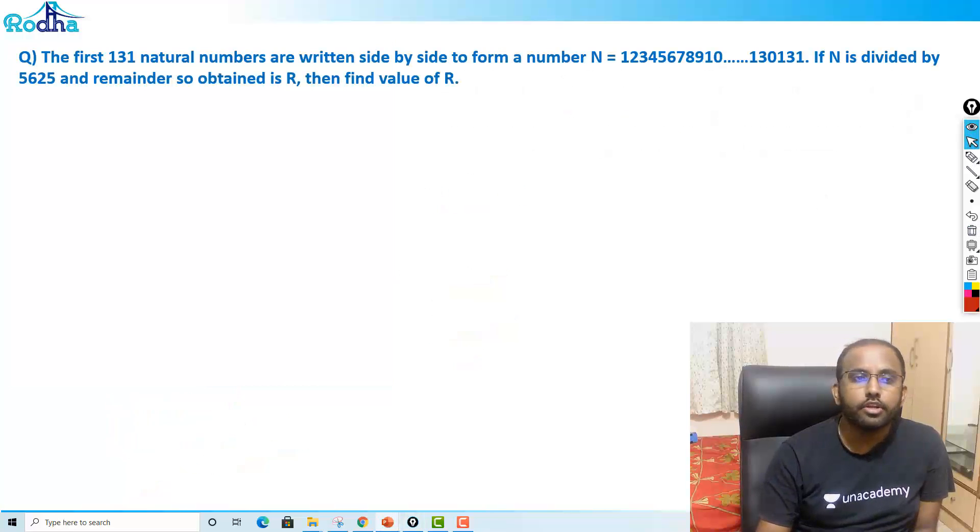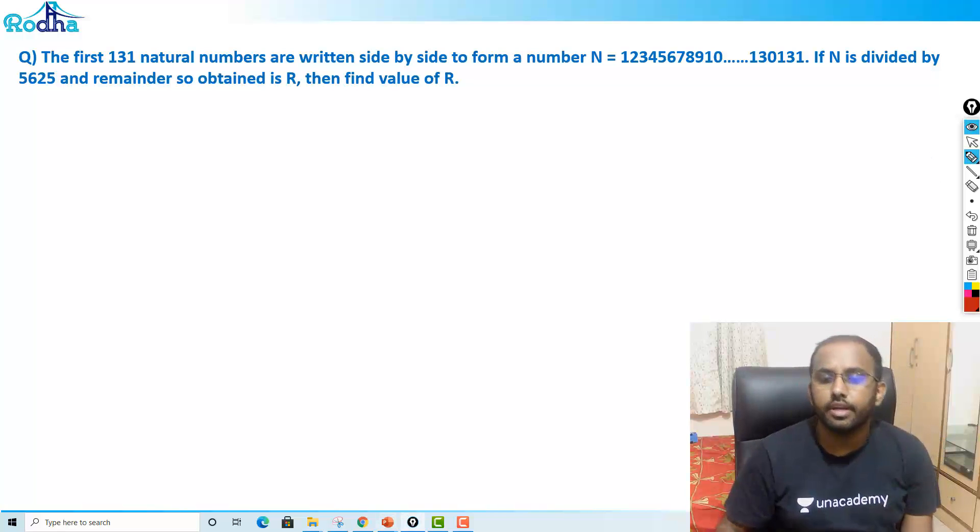Now let's move to the next question guys. Again, a very good question. Look at it. Look here. The first 131 natural numbers are written side by side to form a number N = 123456...130131. If N is divided by 5,625 and the remainder so obtained is R, find the value of R. By this you have to understand that this is a question of Chinese Remainder Theorem.